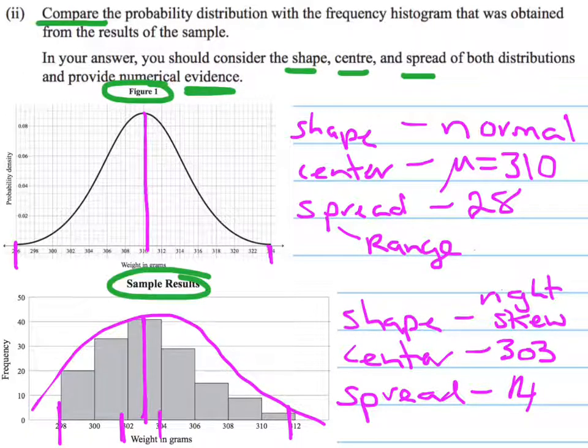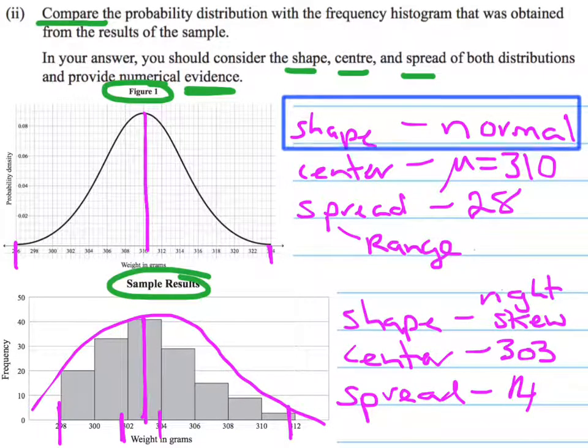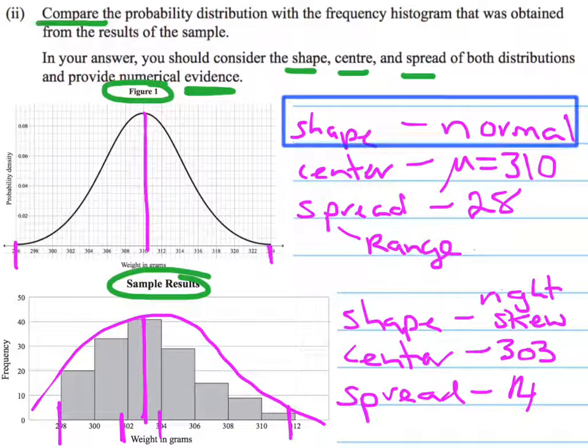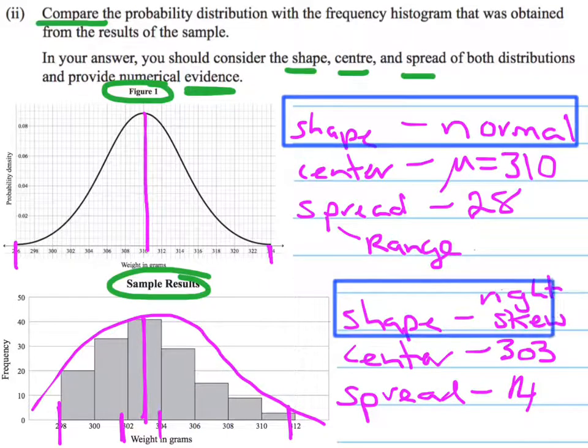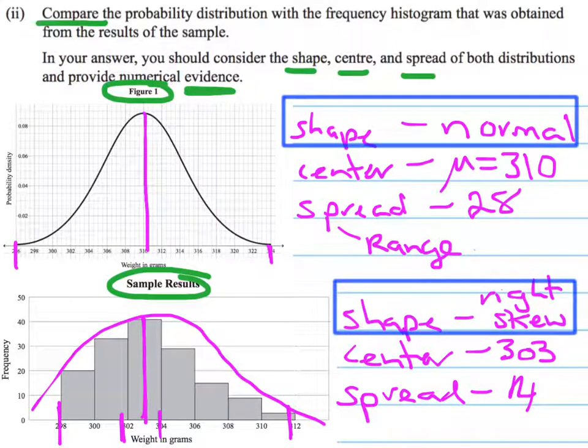Now I need to do a comparison. So I'm going to start with thinking about the shape. So the first one had a shape that follows a normal distribution. That's our theory of what the machine should be doing. Then we've got our sample results, which says the shape is actually a right skewed. So that's the first thing I'm going to write up about, about comparing the two of them, because they want a comparison.